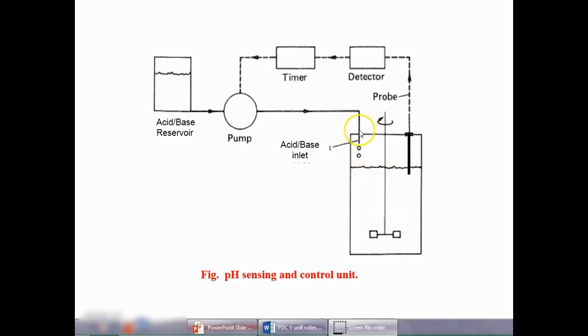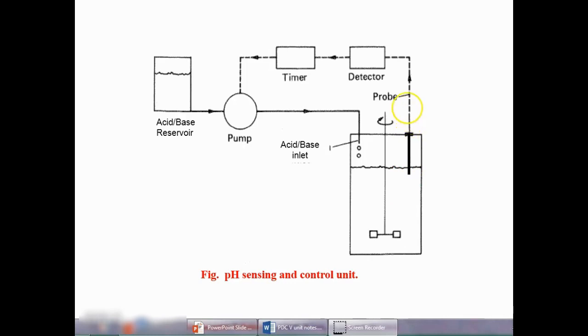Now we will see how pH is controlled in a fermentation process with an example. Here we have taken a fermenter; assume that we want to control the pH. For controlling pH, we use a pH electrode which is inserted in the fermentation broth. It will continuously measure the pH value in the form of an electrical signal, and that value goes to the detector.